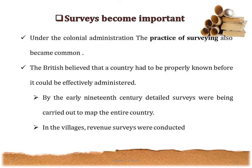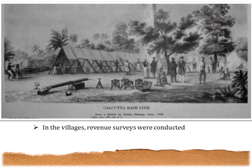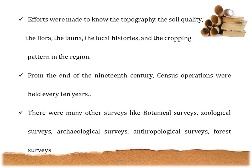Another important source through which we know about this period were the surveys conducted at that time. Under colonial administration, the practice of surveying became common. The British believed that a country had to be properly known before administering it. So by the early 19th century, detailed surveys were being carried out to map the entire country. In villages, revenue surveys were also conducted. Not only revenue surveys — efforts were also made to know the topography, soil quality, flora, fauna, local histories, and cropping pattern of a region.